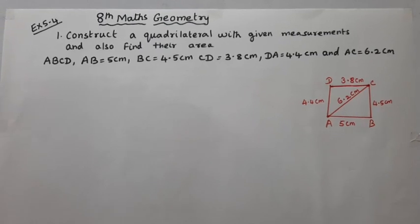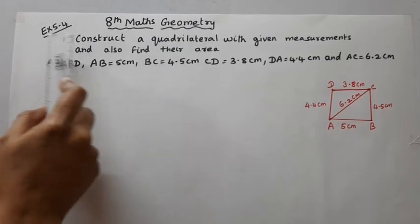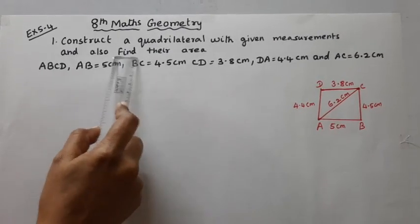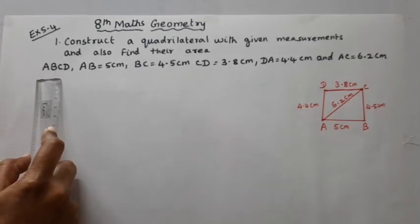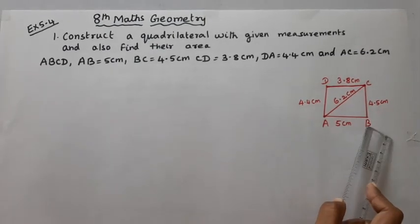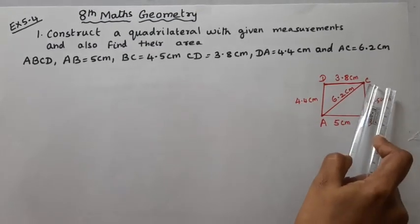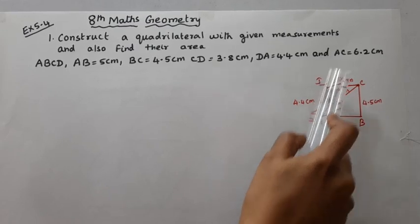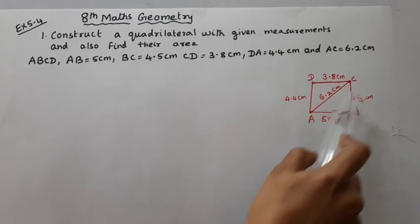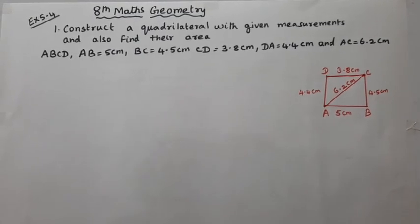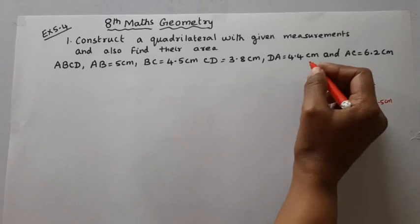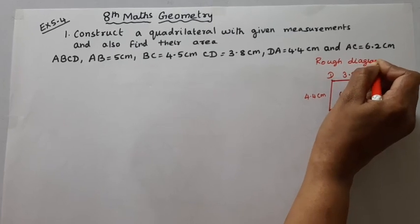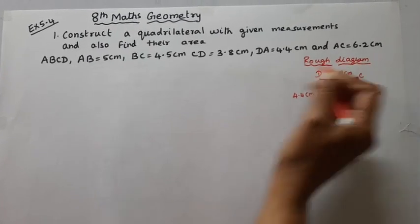Hello students, welcome to Max and Tumult channel. This is 8th standard Maths Geometry Exercise 5.4, first sum: construct a quadrilateral ABCD with given measurements and also find their area. AB = 5 cm, BC = 4.5 cm, CD = 3.8 cm, DA = 4.4 cm, and diagonal AC = 6.2 cm. We have a rough diagram; you can use this as reference.